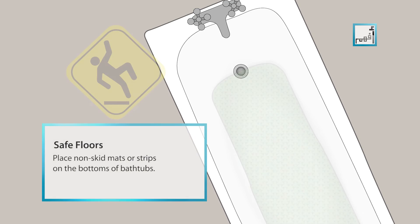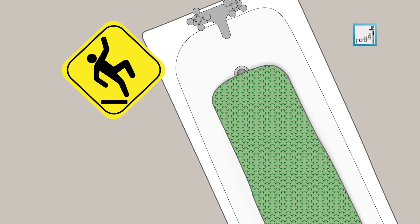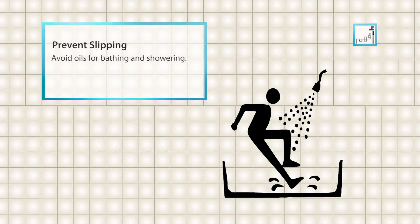Place non-skid mats or strips on the bottom of the bathtubs. Place non-slip pads under rugs to hold them securely to the floor. Avoid using oils for bathing and showering.